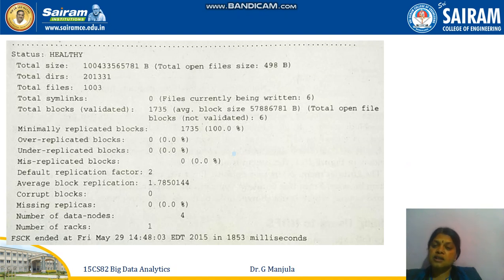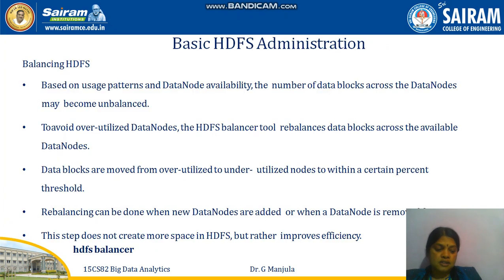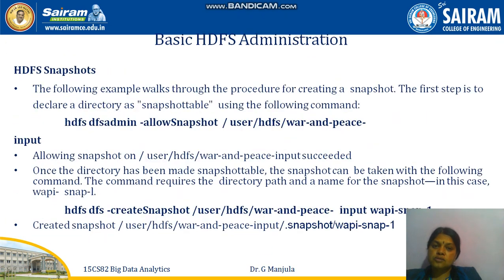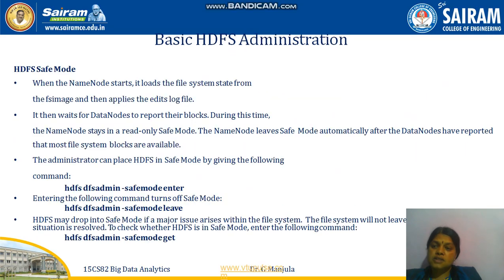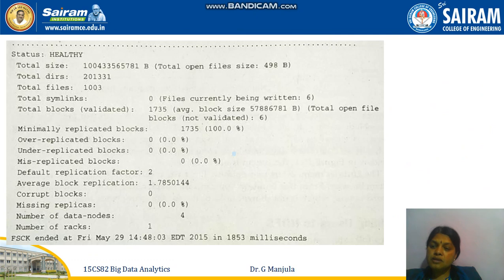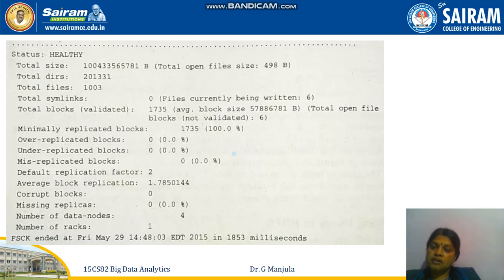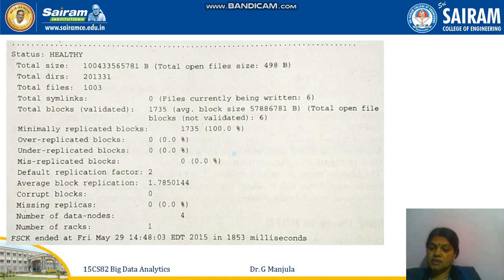The fsck command output includes: total size, total directories, number of files, symbolic links, blocks, and missing files. A block report shows total blocks, minimally replicated blocks, over-replicated blocks, default replication factors, corrupt blocks — which should be zero — missing replicas — which should be zero — and number of data nodes. This is the complete file system health check output.